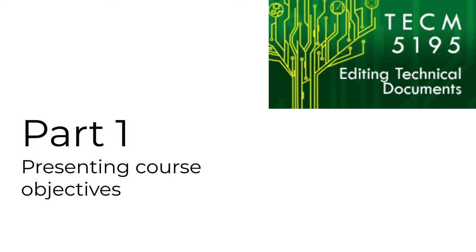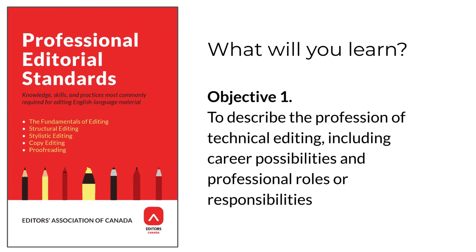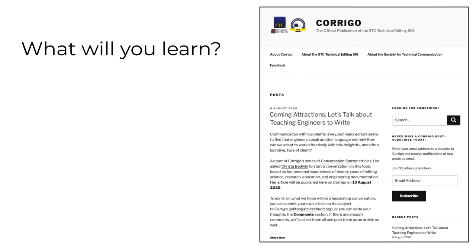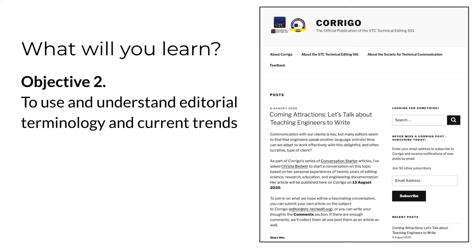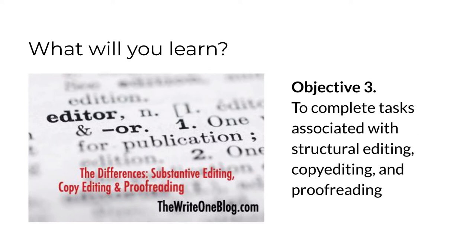All the goals of this course are designed to build the critical editing skills needed by professional technical communicators. The first objective is for you to know enough about the profession of tech editing to be able to describe it to somebody else — what career possibilities exist and what roles or responsibilities are involved. The second objective is for you to learn to use editorial terminology and to understand trends in tech editing within technical communication. The third objective is for you to apply what you learn as you complete tasks in course assignments that involve all levels of editing.